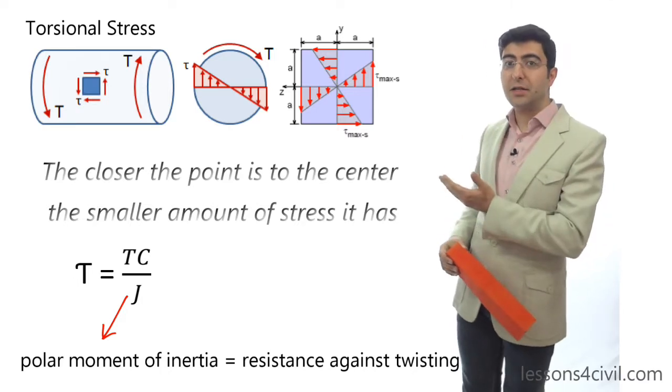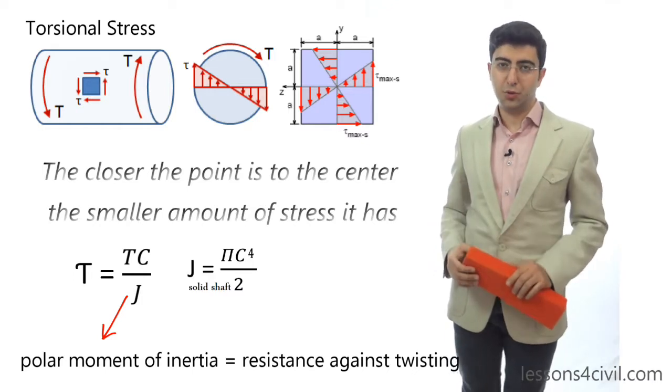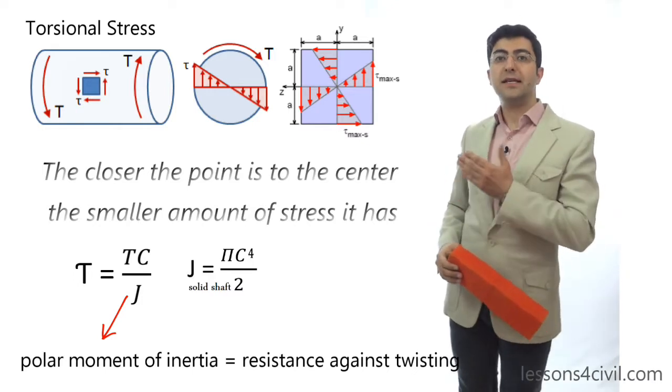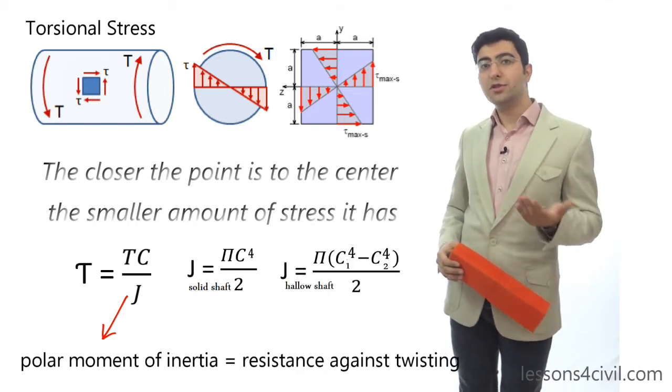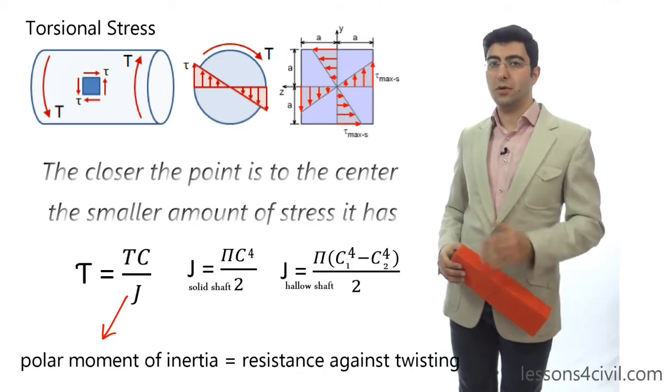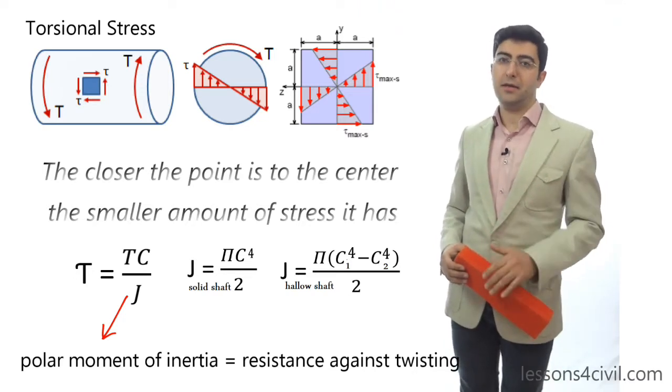For a circular cross-section like this, J is equal to pi C to the fourth over 2. And here, C is the radius of a solid shaft. For hollow shafts, this is equal to this formula, where C1 is the outer radius and C2 is the inner radius.